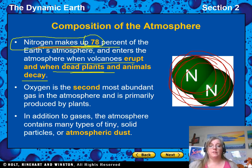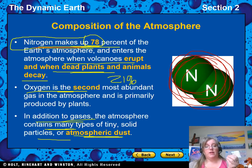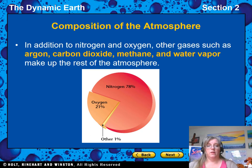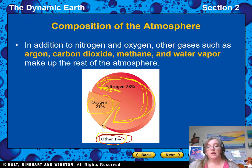Nitrogen is 78%, and oxygen is the second most at only about 21%. Beyond that, you have lots of small amounts of other gases and atmospheric dust. Here's a pie chart: nitrogen is 78% of the atmosphere, oxygen is only 21%, and then the other gases — carbon dioxide, methane, argon, and water vapor — make up the remaining tiny 1%.